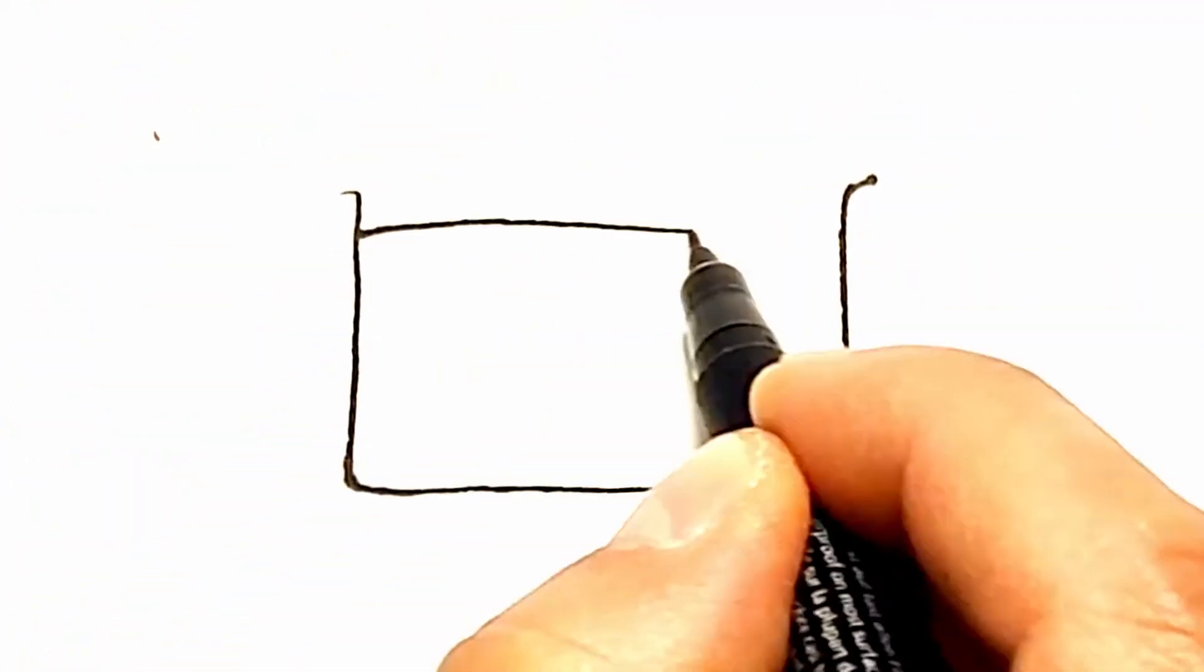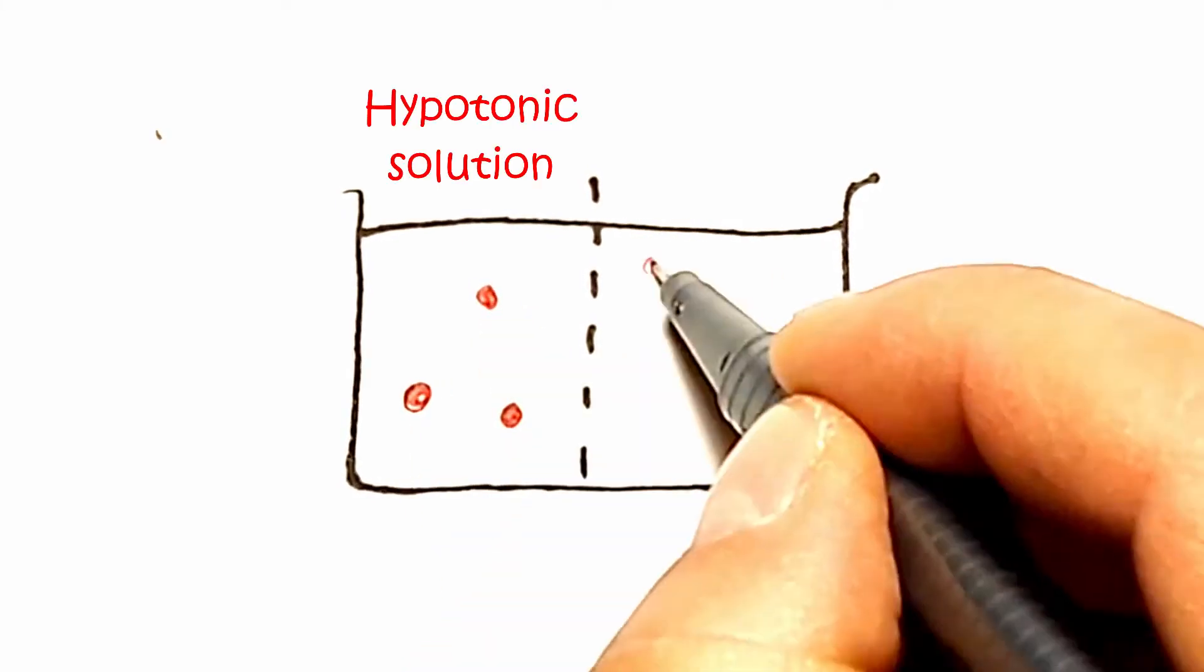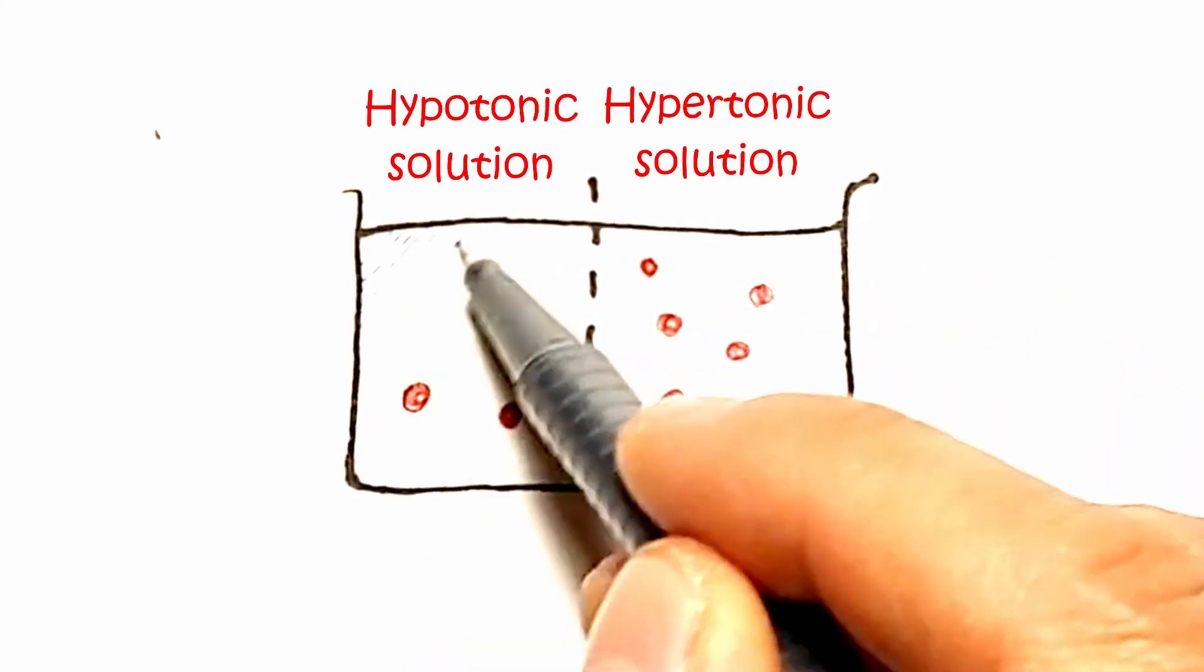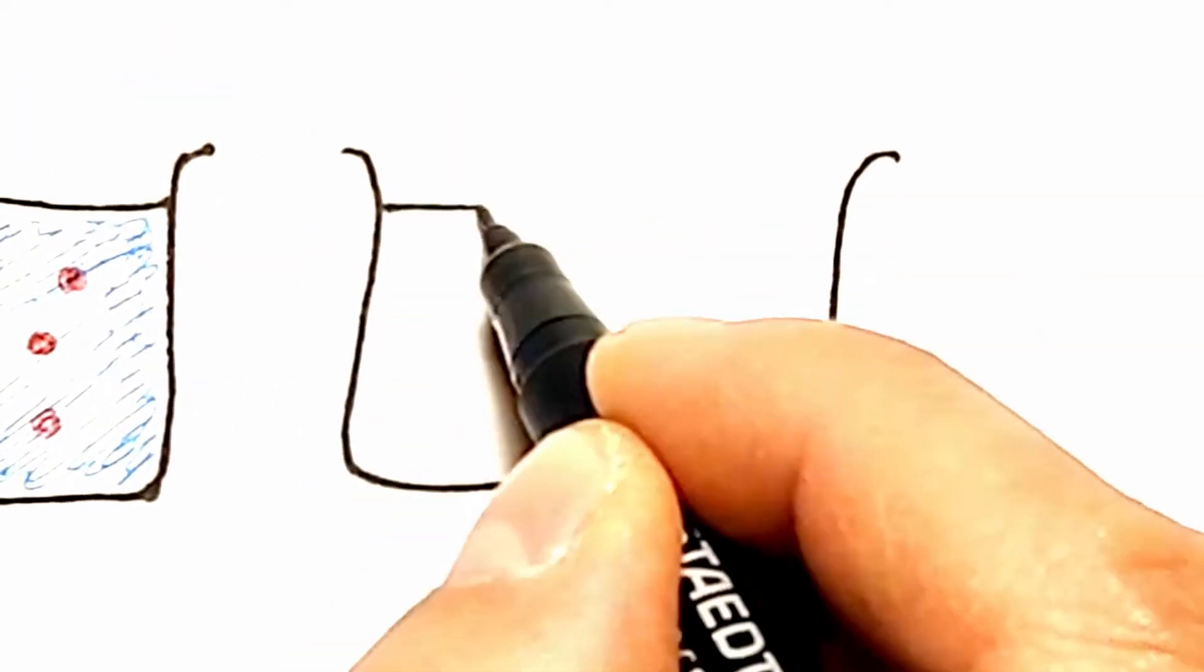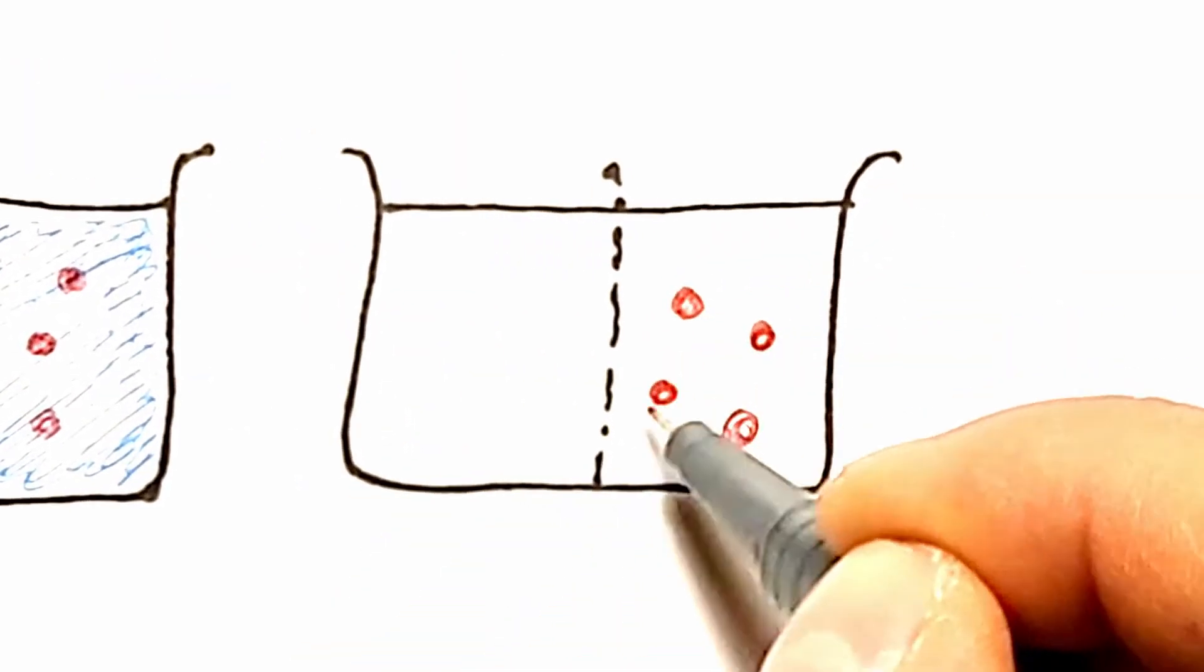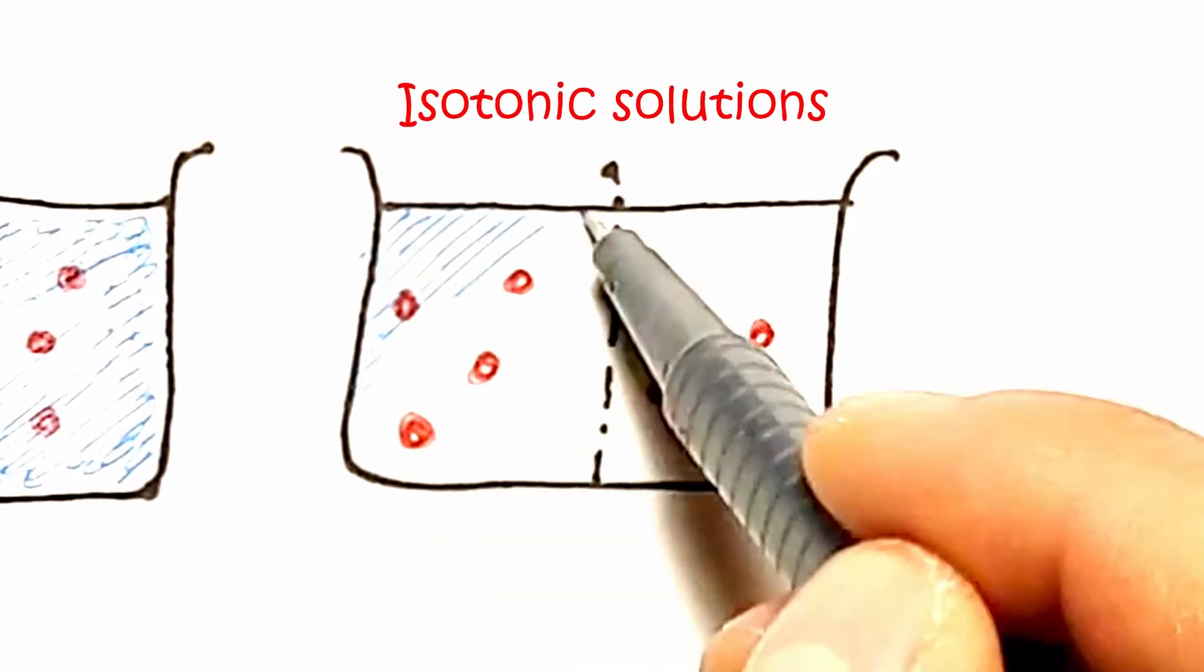A water solution with a higher concentration of solutes is called a hypertonic solution, while one with a lower concentration is called hypotonic. There is a third possibility when the concentration of solutes is the same in two solutions, in which case they are called isotonic solutions.